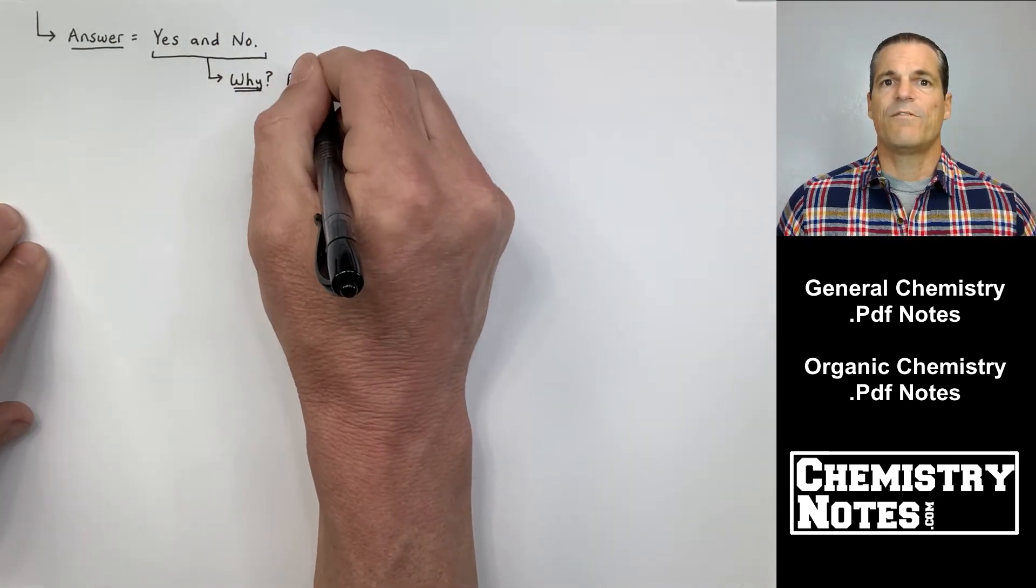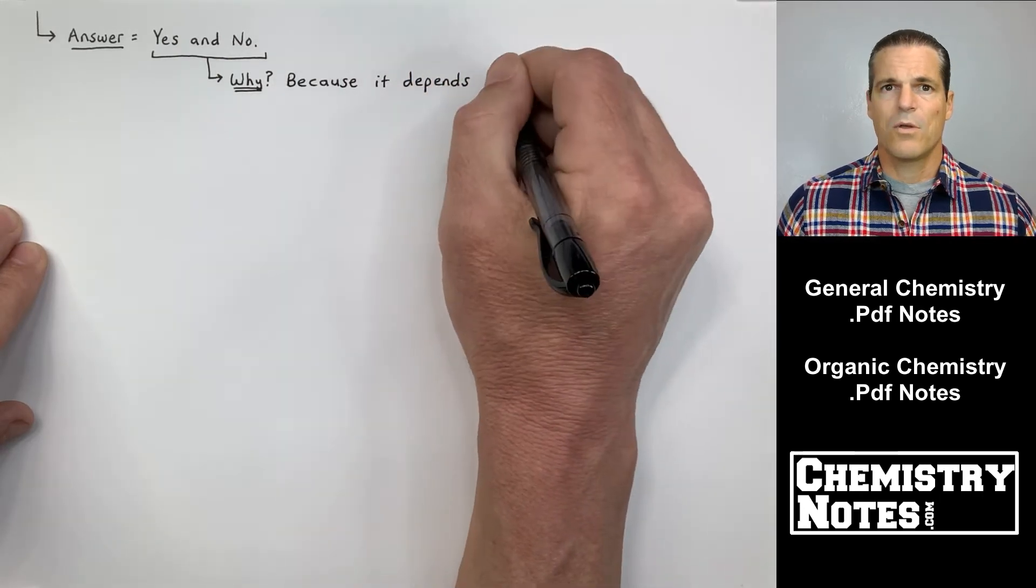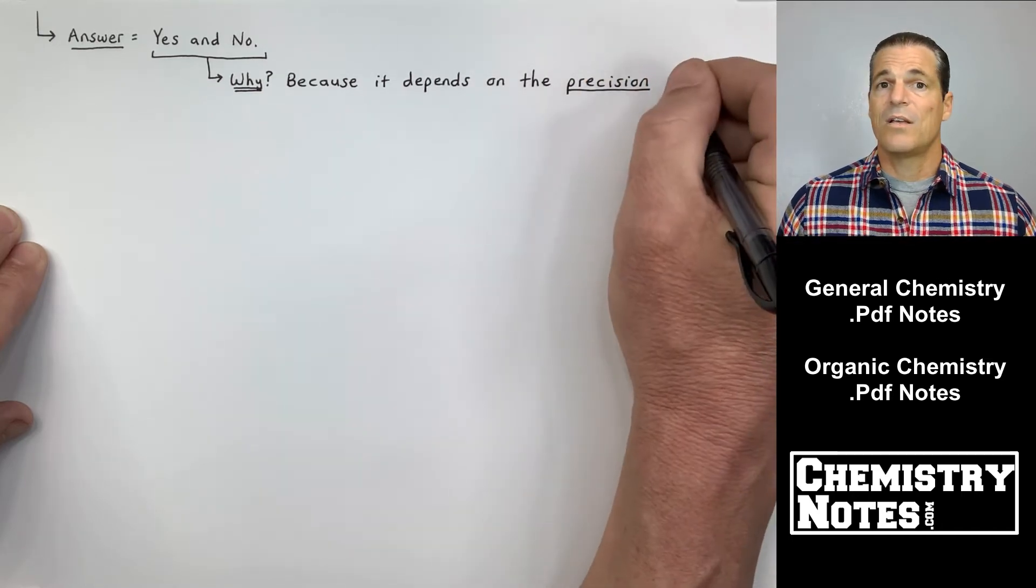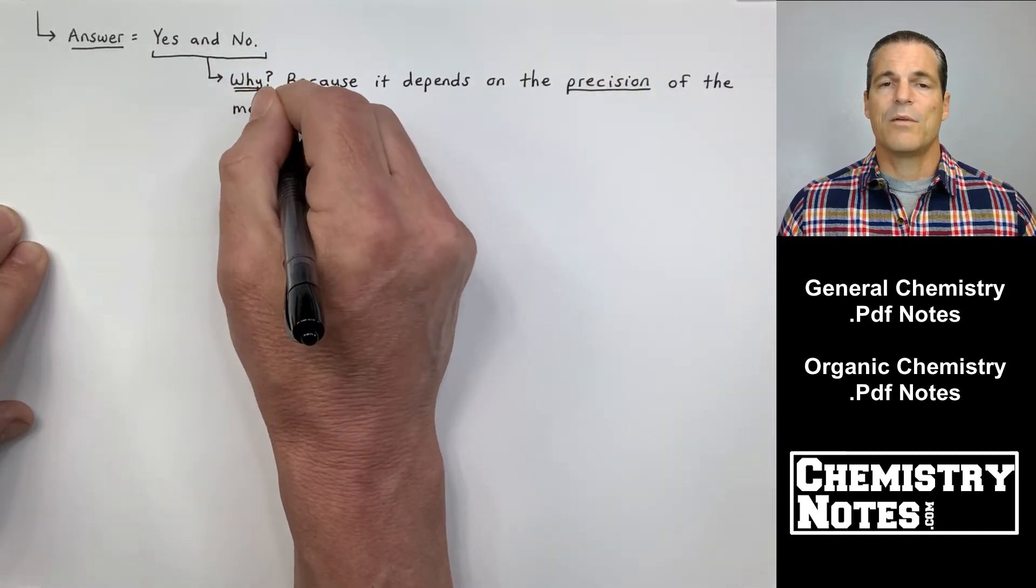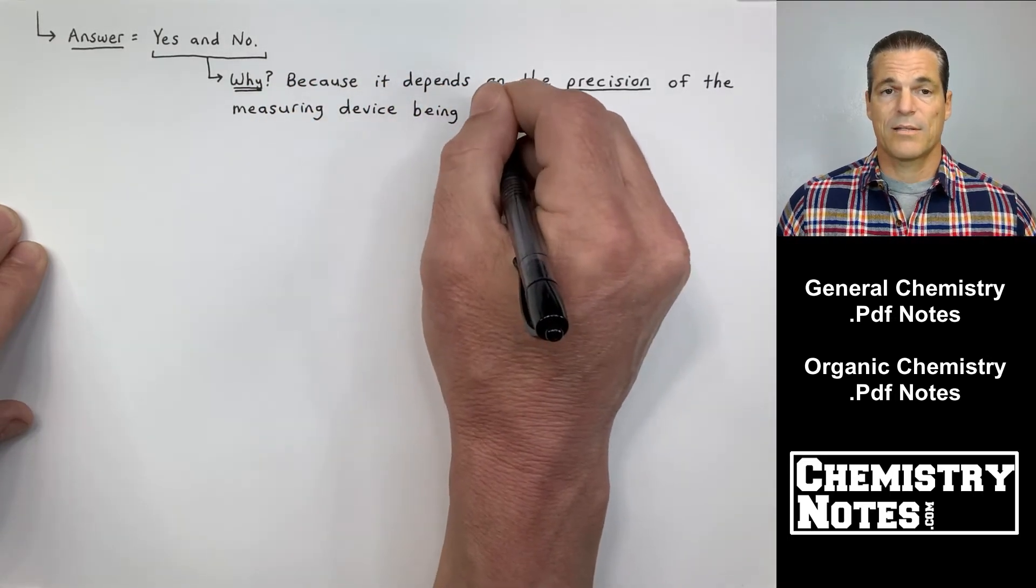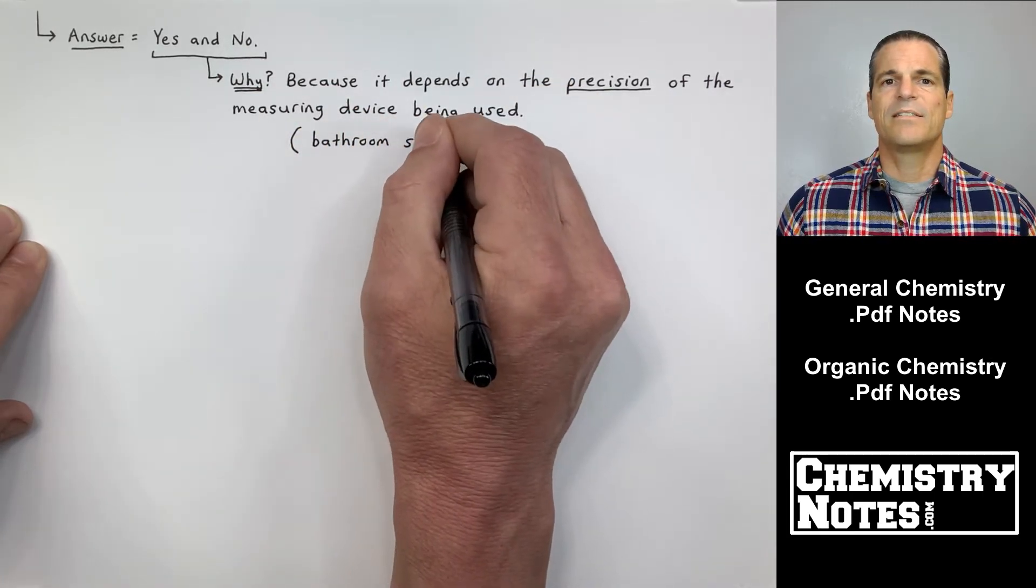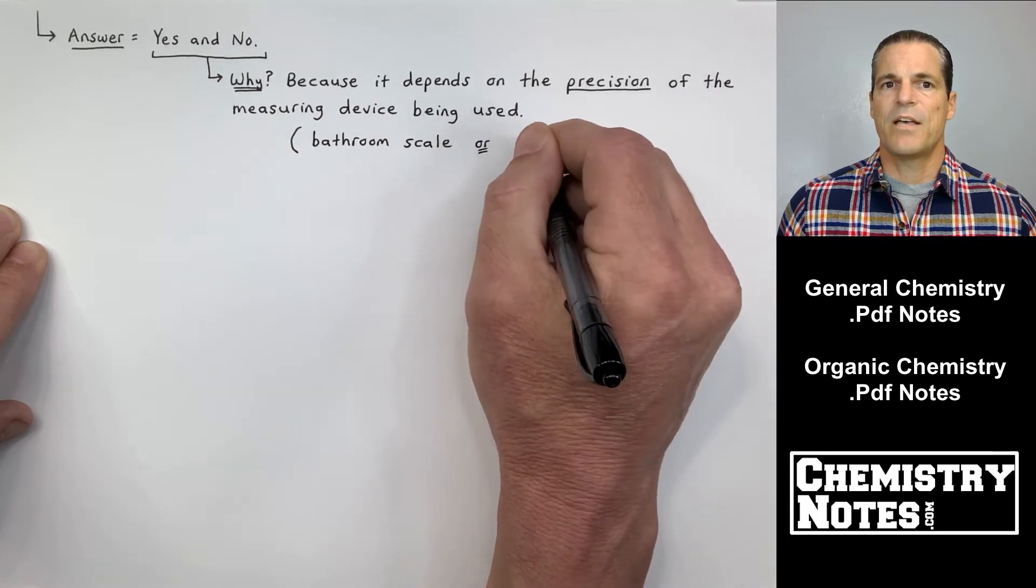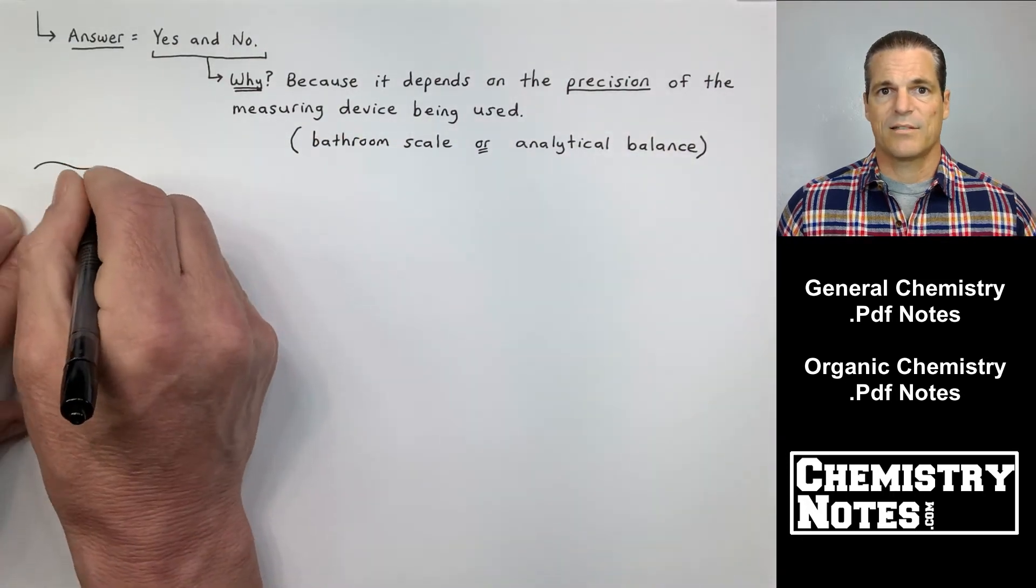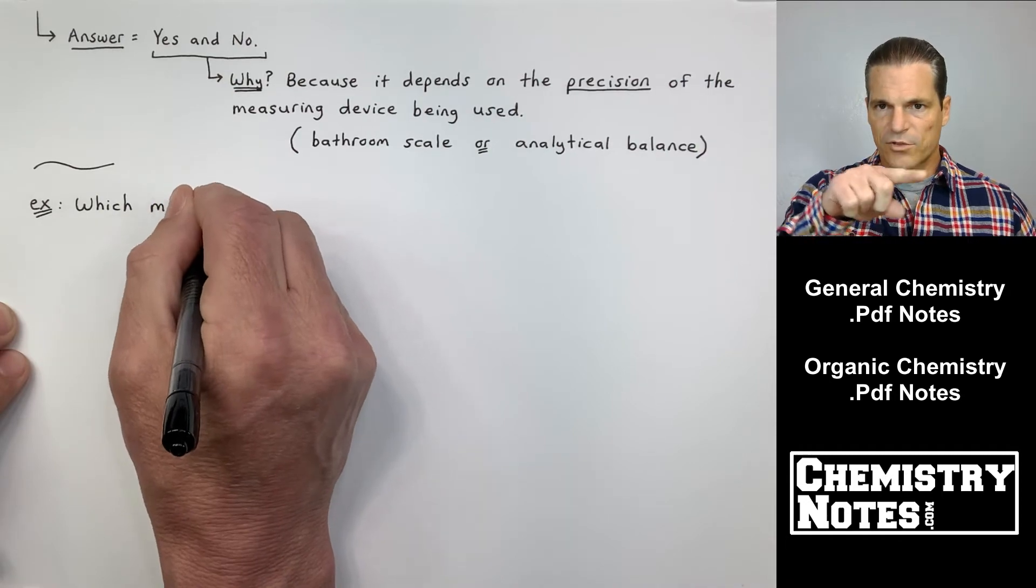Yes and no. Well, why is it yes and no? Well, if you look at the first measurement on the bathroom scale, 1.5 pounds was the answer to both. We only went as far right as the tenths place, one decimal place. Whereas the analytical balance, it recorded the weight with much more precision, three decimal places. So why is my answer yes and no? Because it depends on the precision of the measuring device or the instrument being used. Bathroom scale is not as precise as an analytical balance.